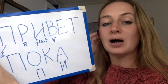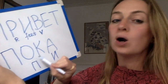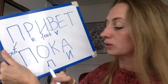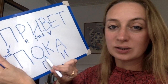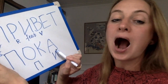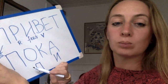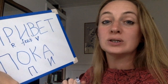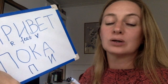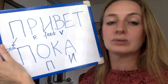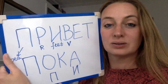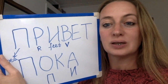To say bye we say пока. One important thing to remember: if you see letter О in Russian, you often pronounce it like А. Here it's written пока but we pronounce it пака. The key sentences for video number one are Привет and пока.